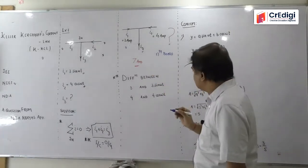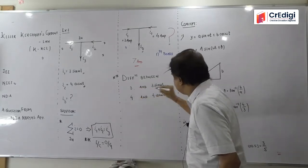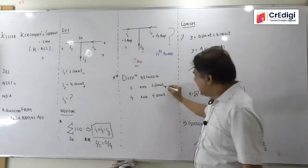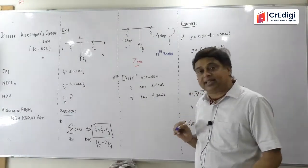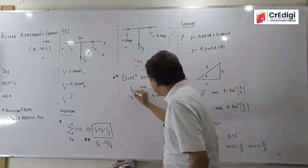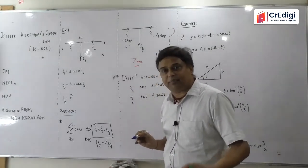But dear students, understand the difference. If current is 3 and current is 3 sin omega t, things are very different. If current is 4 and current is 4 cos omega t, things are very different. Very different things.